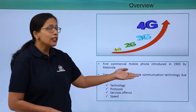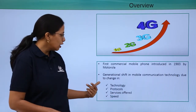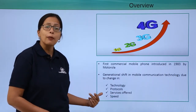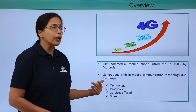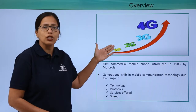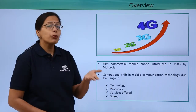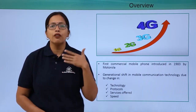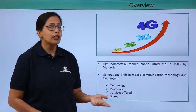Because of these requirements, mobile technology also underwent severe changes over the years. These changes were basically due to the technology, the protocols, the services offered, and speed. Different technologies were developed for four generations — 1G, 2G, 3G, and 4G — and different protocols were also required because they needed to offer different services at faster speed.